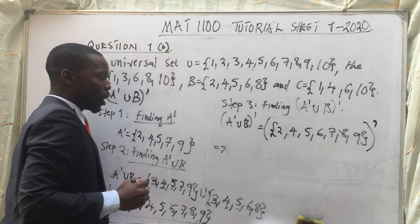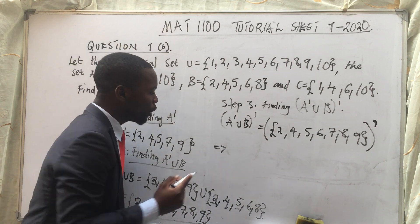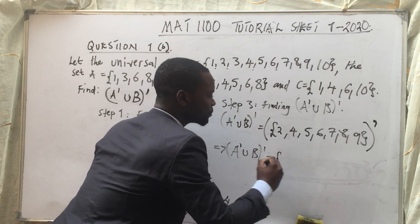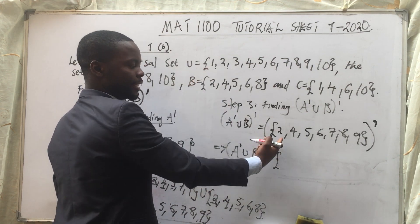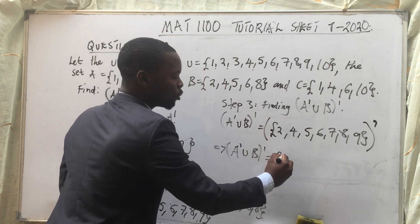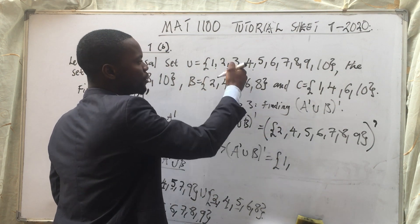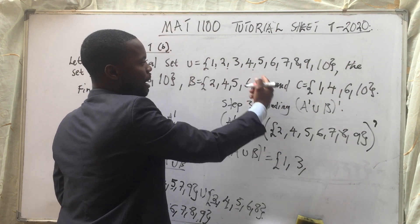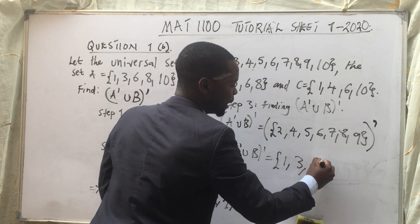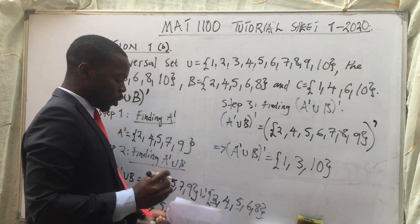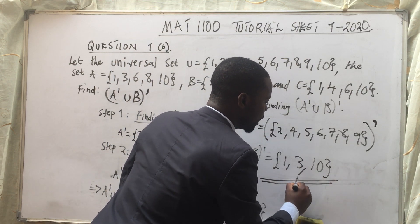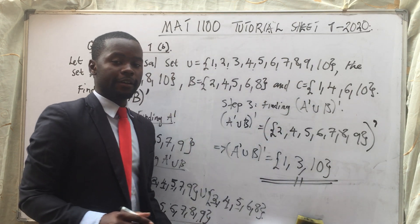Checking each element: 1 is not there, 2 is there, 3 is not there, 4 through 9 are all there, but 10 is not there. So A complement union B, everything complement = {1, 3, 10}. Very simple calculation.